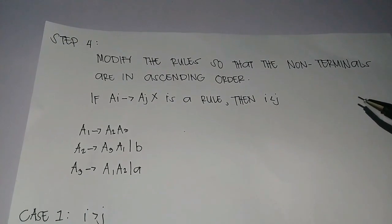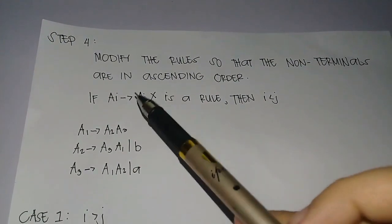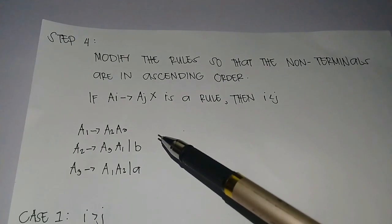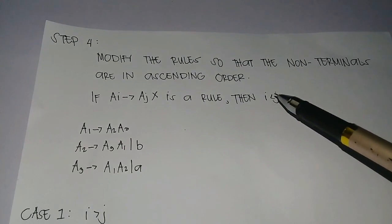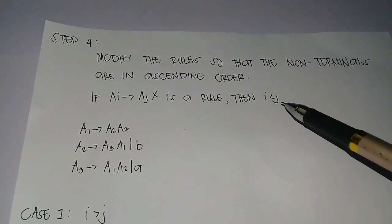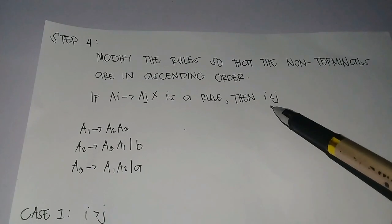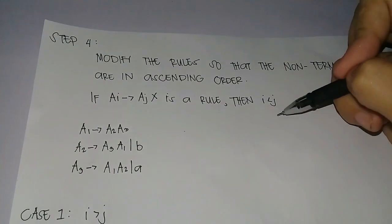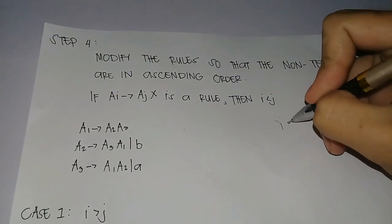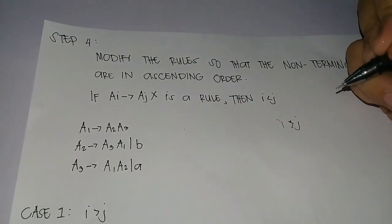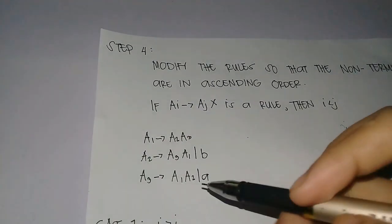Then A3 goes to A1 A2 and A. Step 4: Modify the rules so that the non-terminals are in ascending order, such that if the production is of the form Ai gives Aj X, then I should always be less than J. It should never be I greater than J.